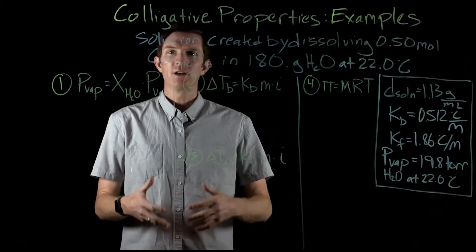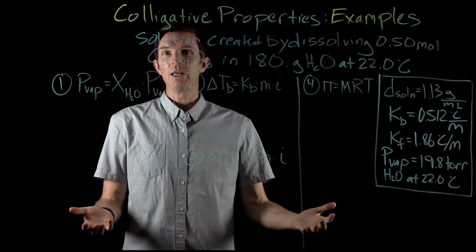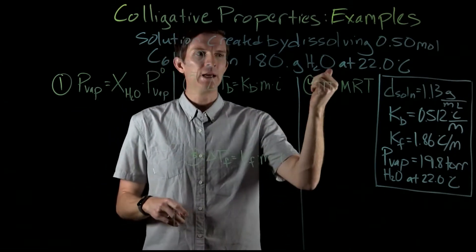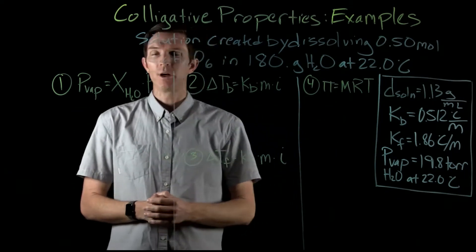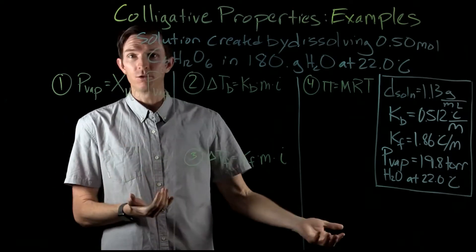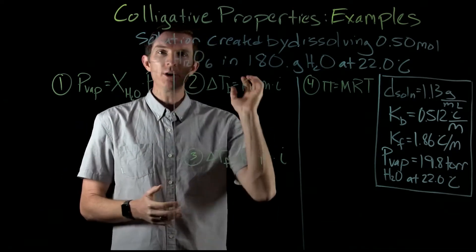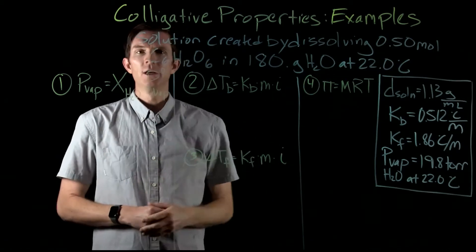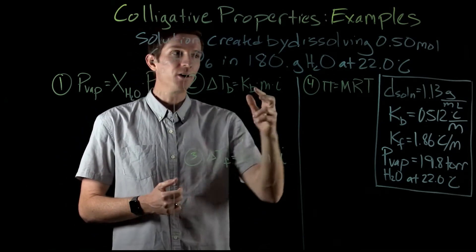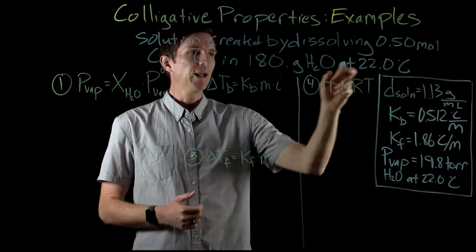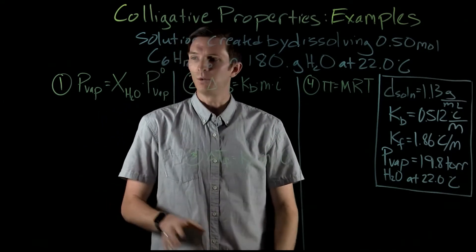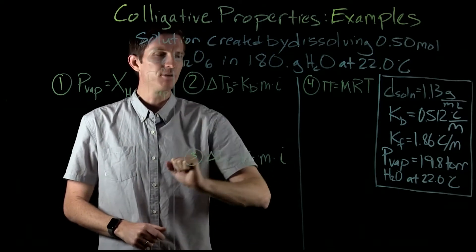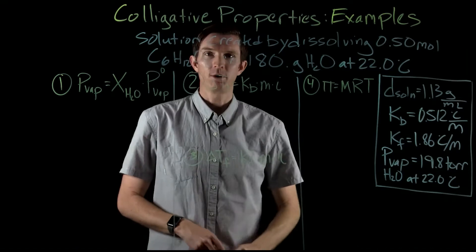The previous videos gave us a foundational conceptual understanding of what happens to vapor pressure, boiling point, freezing point, and how osmotic pressure is created when we make a solution. So now we want to work through an example. Let's say we create a solution by dissolving 0.5 moles of glucose, C6H12O6, in 180 grams of water at 22 degrees Celsius. We want to calculate the vapor pressure of our solution, how our boiling point has changed, how our freezing point has changed, and what our osmotic pressure is.